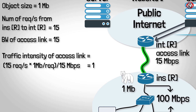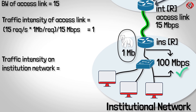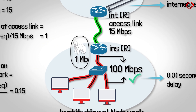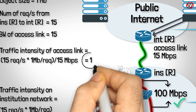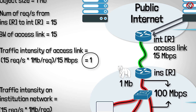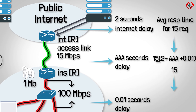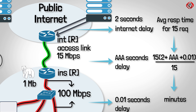Once the institution router receives the object, it sends it to the destination web browser over the 100 Mbps local area network. Therefore, the traffic intensity on the institution network is 0.15, meaning the LAN is operating at 15% of its capacity, resulting in minimal delays of about 10 ms (0.01 seconds). On the other hand, a traffic intensity of 1 on the access link means the link is fully used, and as the traffic intensity gets close to 1, delays increase a lot, causing average response times of minutes — which is unacceptable.